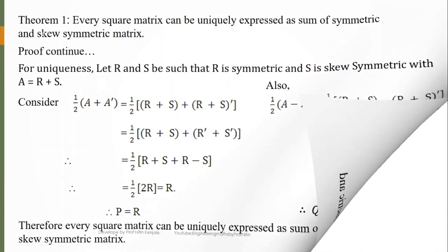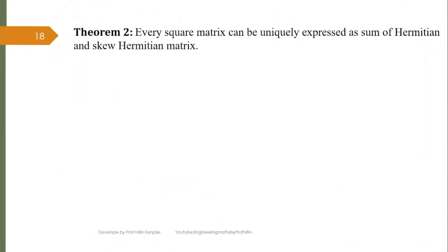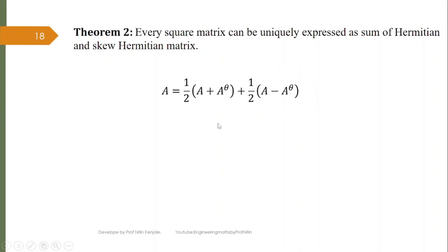Now we see Theorem 2, which states that every square matrix can be uniquely expressed as sum of Hermitian and skew-Hermitian matrix. The proof of this theorem is almost similar to the proof of Theorem 1 — we just replace every 'symmetric' with 'Hermitian' and every transpose notation with θ (conjugate transpose). So A = (1/2)(A + A^θ) + (1/2)(A - A^θ), with P = (1/2)(A + A^θ) Hermitian and Q = (1/2)(A - A^θ) skew-Hermitian.